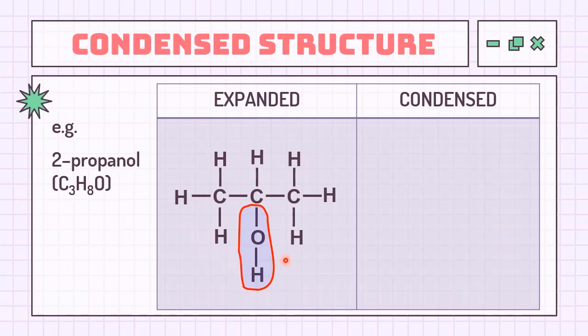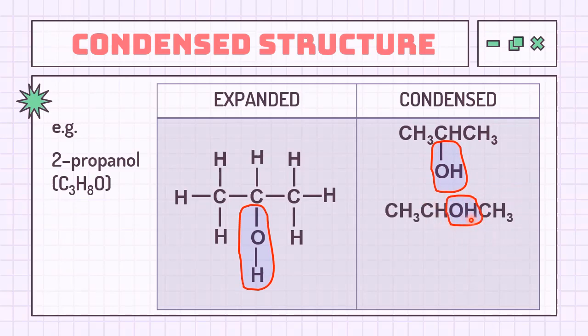We have few representations of 2-propanol condensed structure. First, use a single bond to show the bond between carbon and OH. Second, you can also insert this OH in between the carbon backbone as long as the functional group is positioned at the same carbon as the one in expanded.